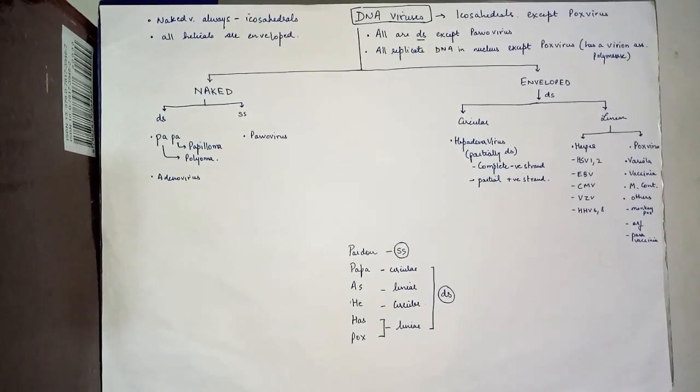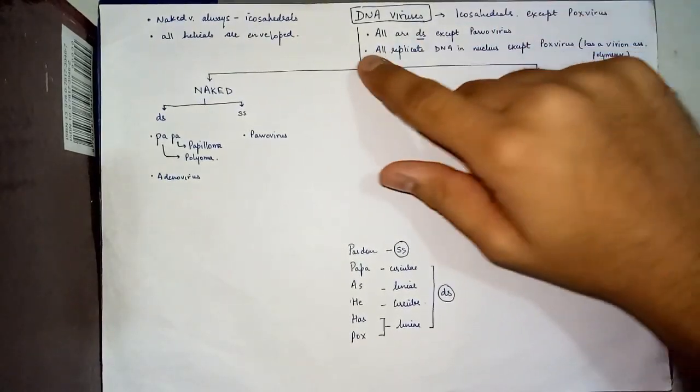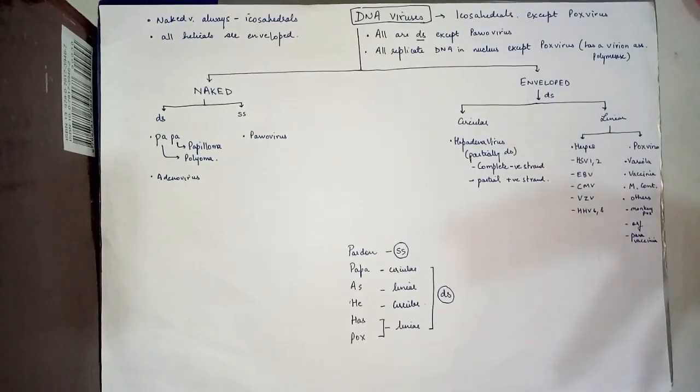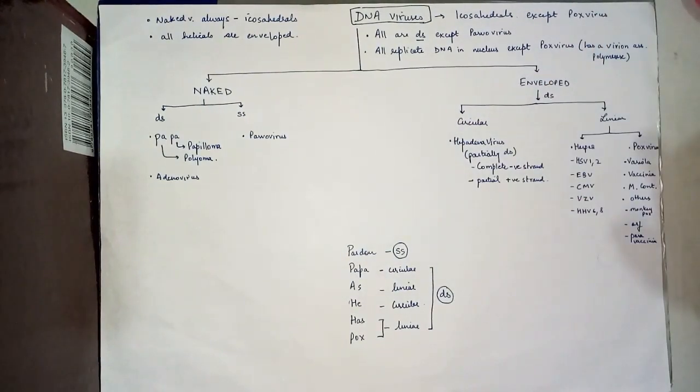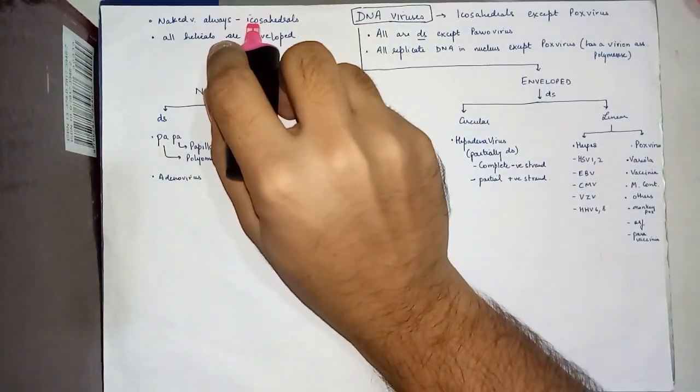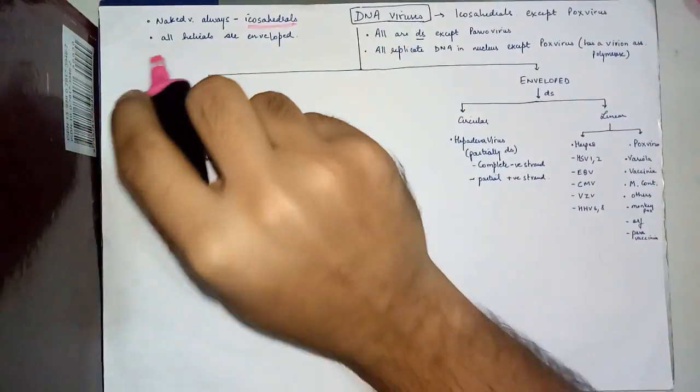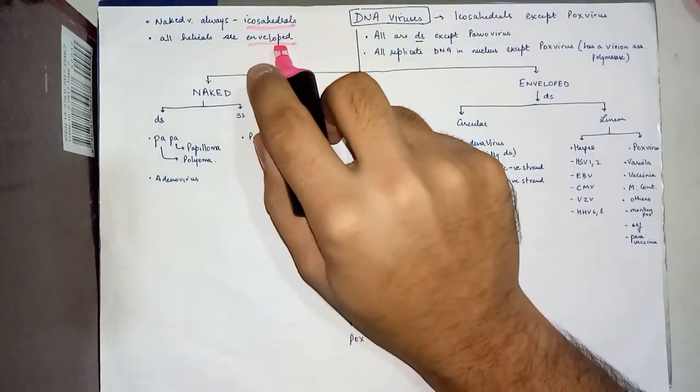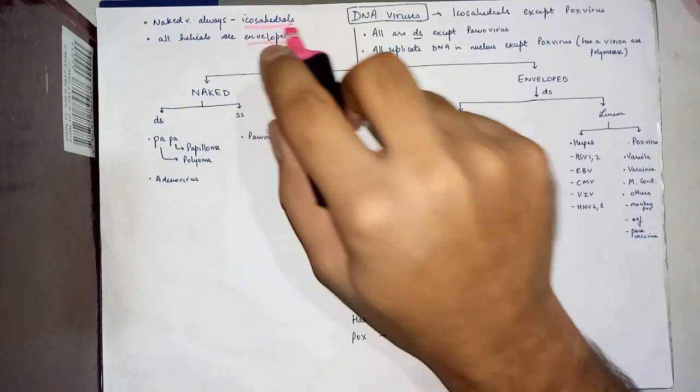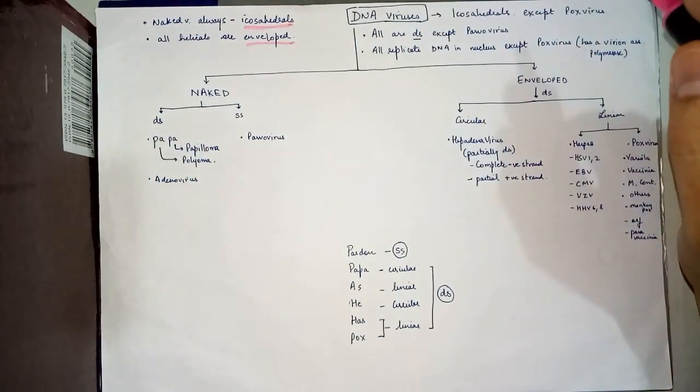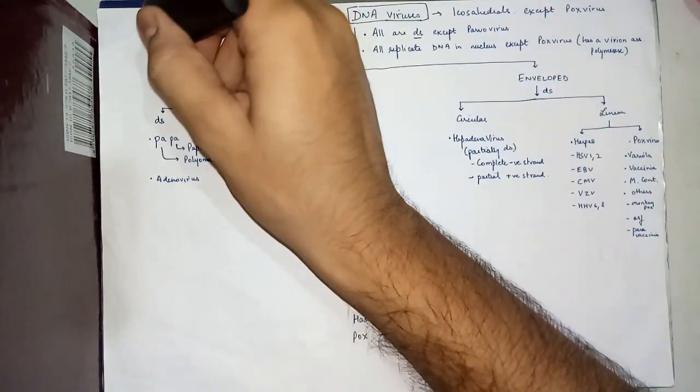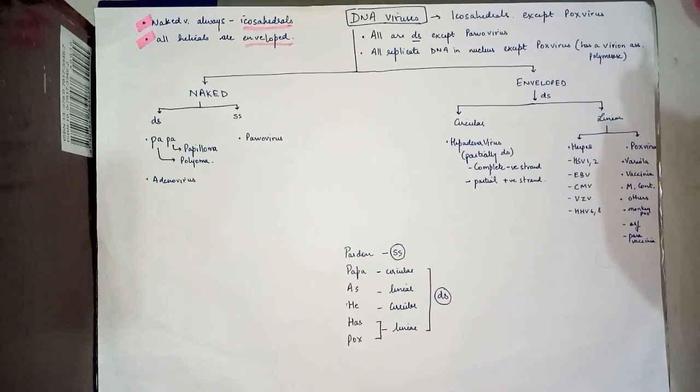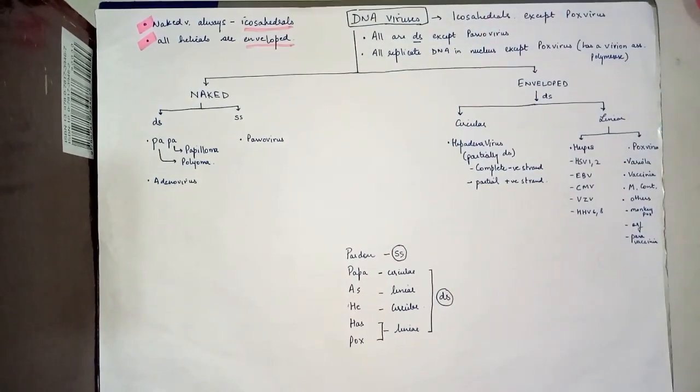We'll begin with the DNA viruses. There are a few general concepts that one should know before we start with the classification, and that is that naked viruses are always icosahedrals and all helicals are enveloped. This is not true vice versa. Just remember this exact line: naked viruses are always icosahedrals and all helical viruses are enveloped.